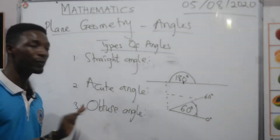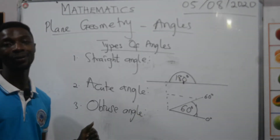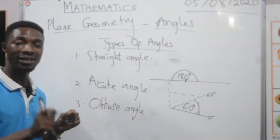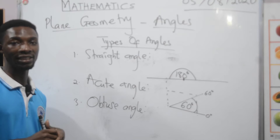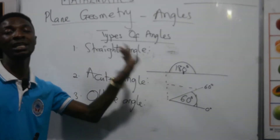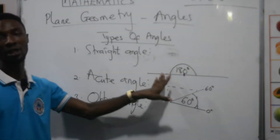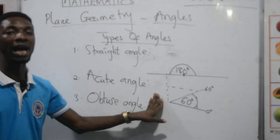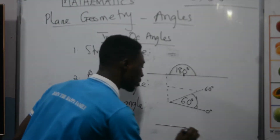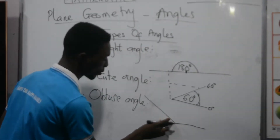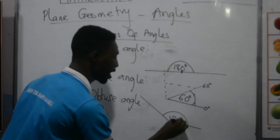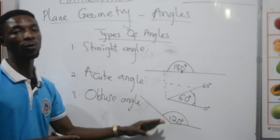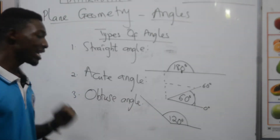The next type is the obtuse angle. For an obtuse angle, its measure is greater than 90 degrees but less than 180 degrees. We already said that an angle measuring 180 degrees is a straight angle. An angle of 120 degrees, for example, is less than 180 but greater than 90 degrees, so we call it an obtuse angle.